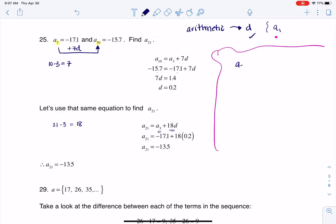So if I wanted to, I could say something like A sub 3 was A sub 1 plus 2D. And again, I'm getting this 2 here, because to get from 1 to 3, that is two terms down the line. Okay, well, I know A sub 3 is negative 17.1. I know D is 0.2. And when I solve for A sub 1, I get negative 17.5.